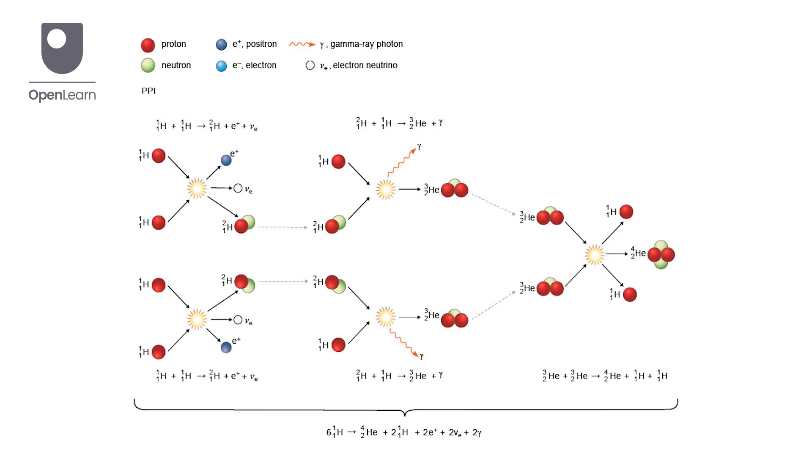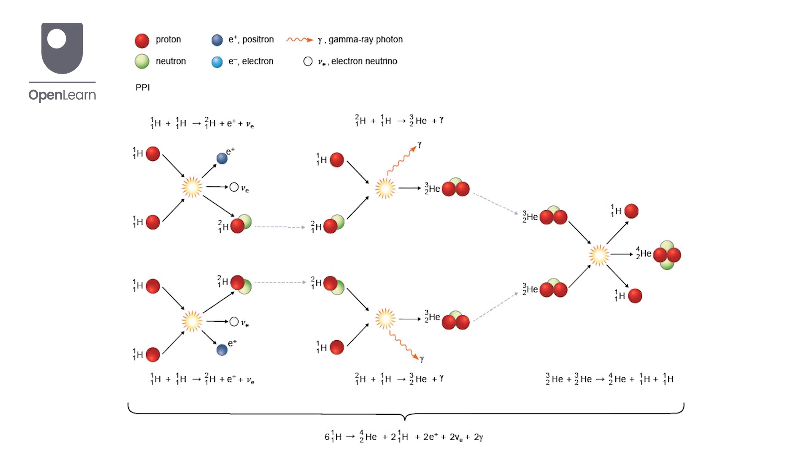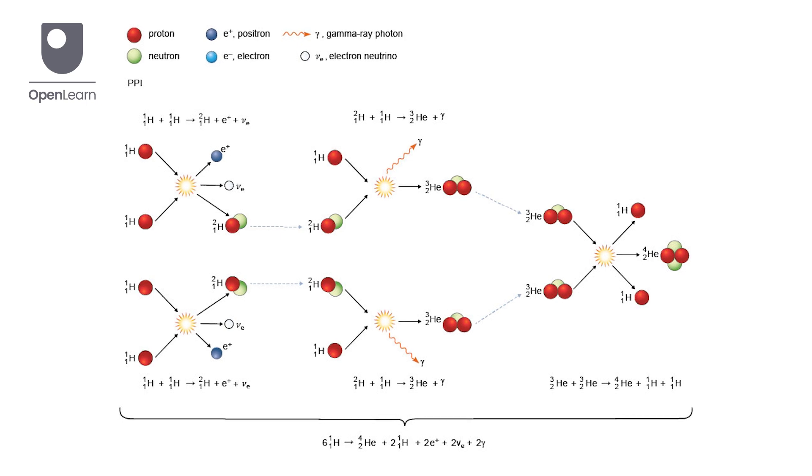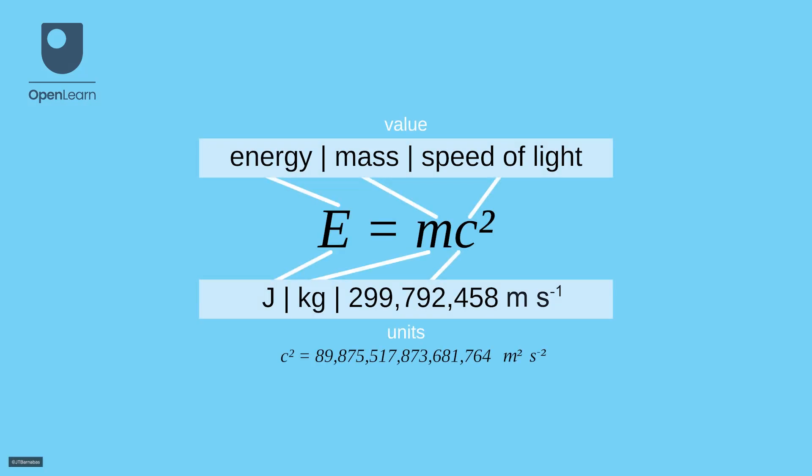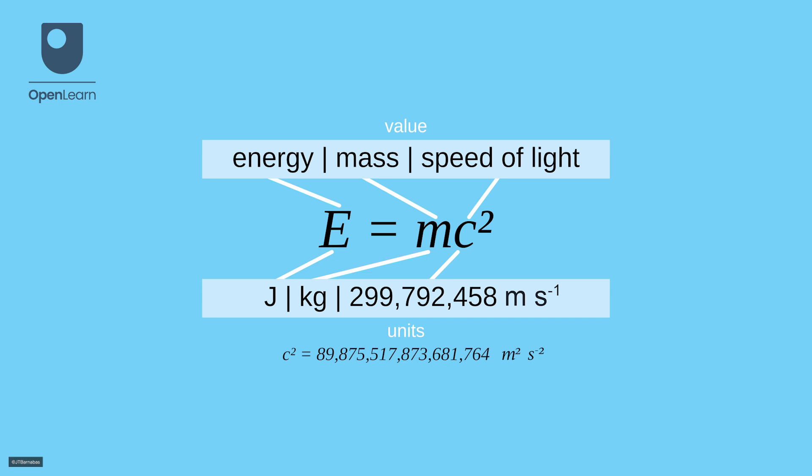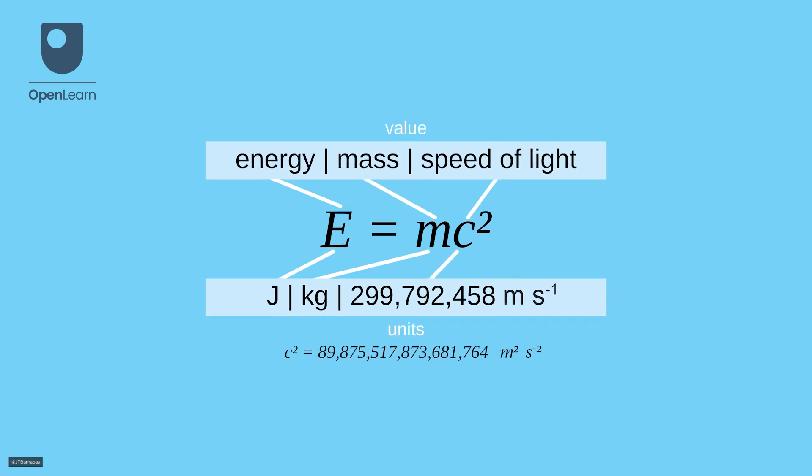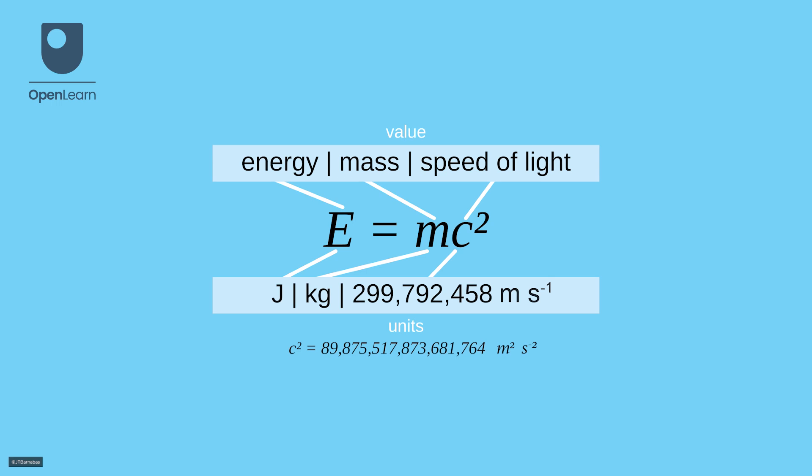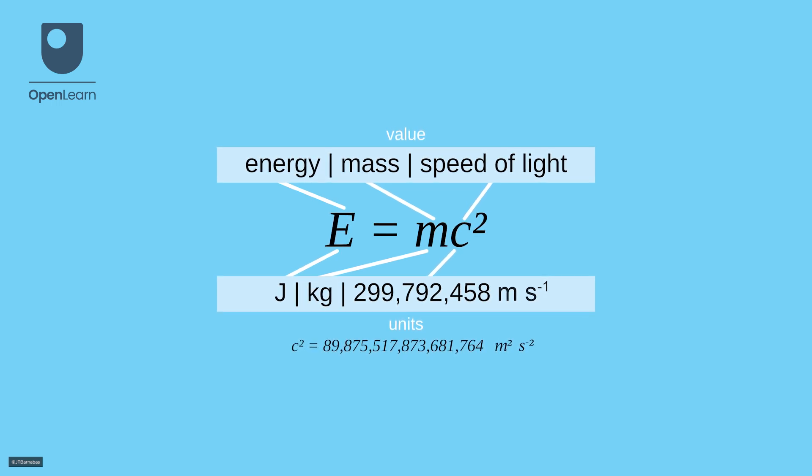A chain of nuclear reactions was triggered, fusing particles together and making particles that had a little bit less mass. If you know one equation from physics, then there is a good chance it is e equals mc squared. The speed of light is a big number, so a small difference in mass is equivalent to a lot of energy.